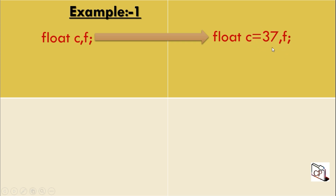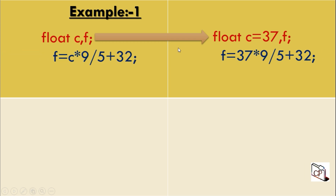User enters a value and we declare a float variable which will store it. Now c is equal to 37. Using the formula, as you can see, c is equal to 37, multiplied by 9 upon 5 plus 32. Now we will solve the value and our answer will be 98.5.